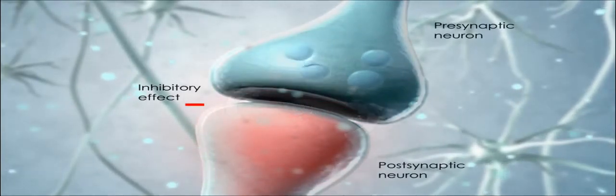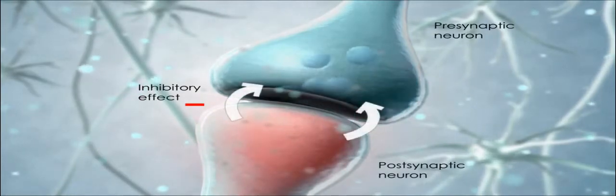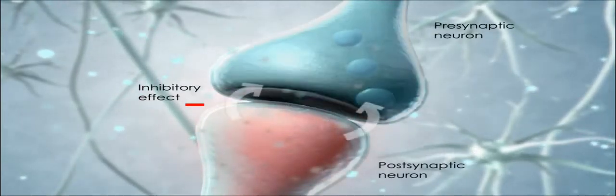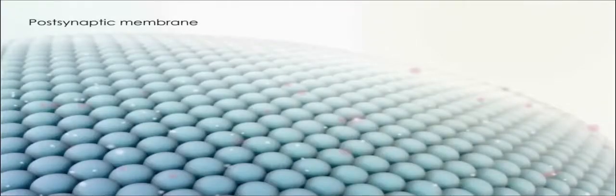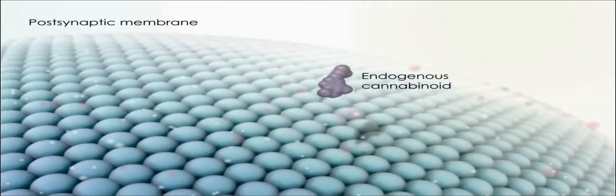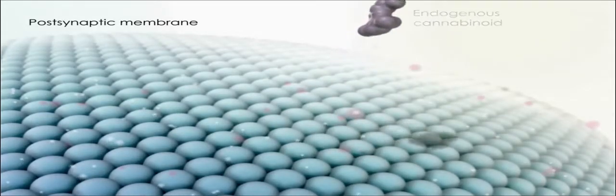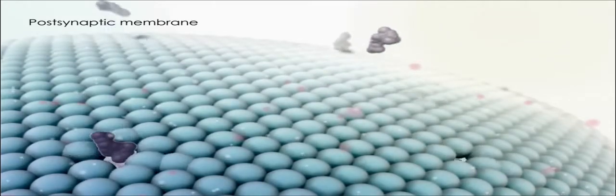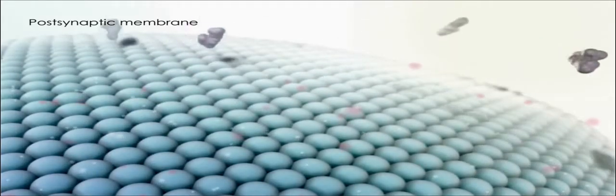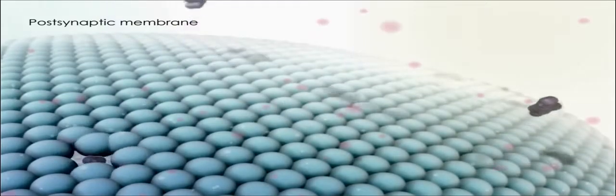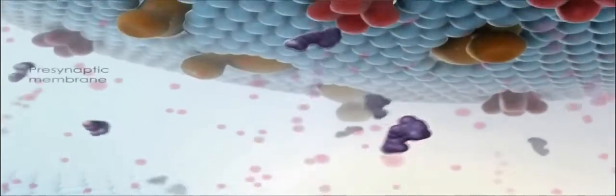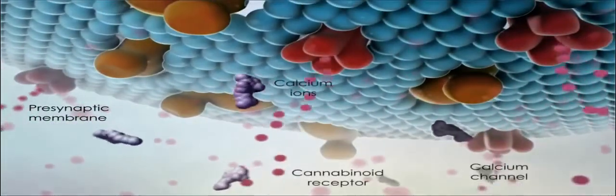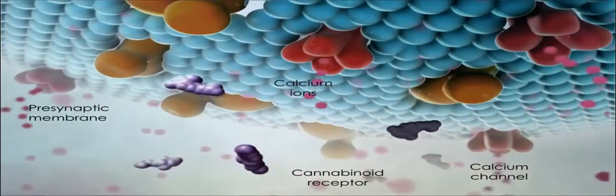The generation of post-synaptic action potentials is modified by an endogenous cannabinoid regulatory system. Endogenous cannabinoids are synthesized on demand from the phospholipid bilayer of the post-synaptic membrane. These lipophilic ligands are released directly into the synaptic cleft and act in retrograde fashion on the pre-synaptic neuron where the cannabinoid receptors are expressed.